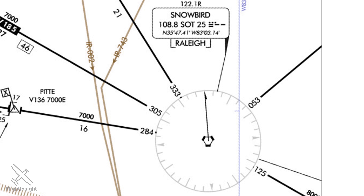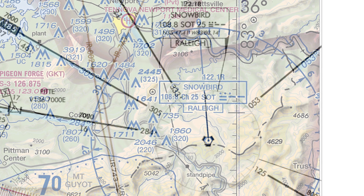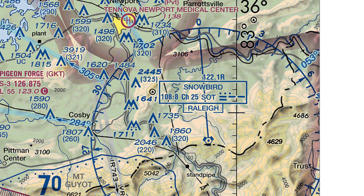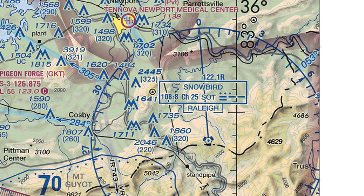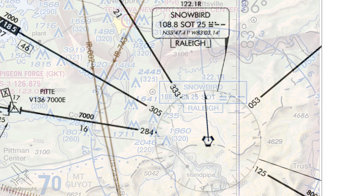Looking at latitude and longitude on the en route chart, we see that the intersection of these two blue lines is at north 36 degrees, west 83 degrees. You might recall that one minute of a degree along a longitude line is one nautical mile.